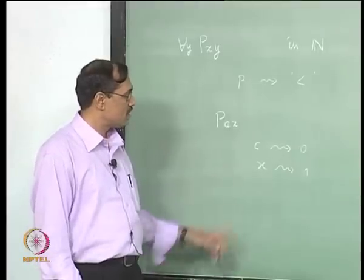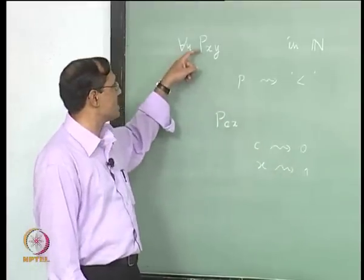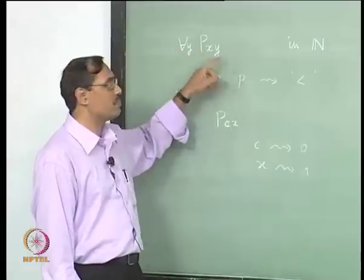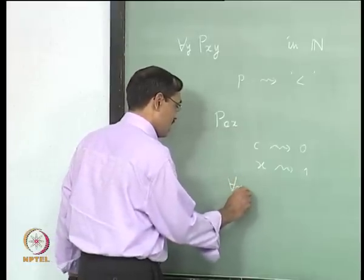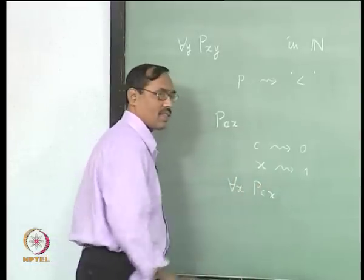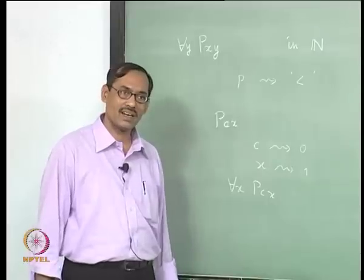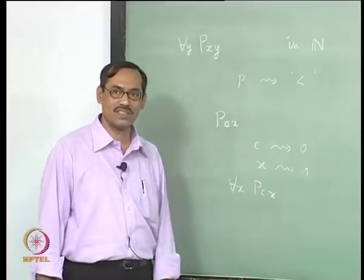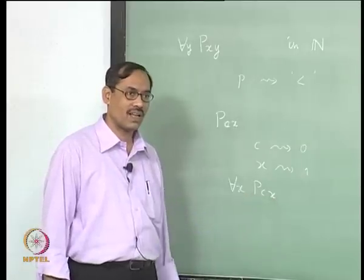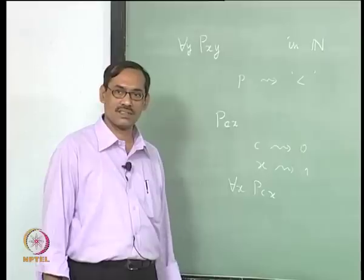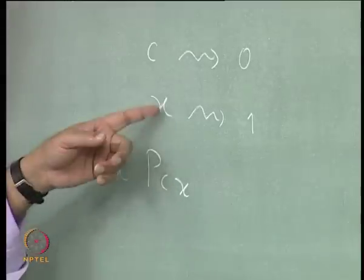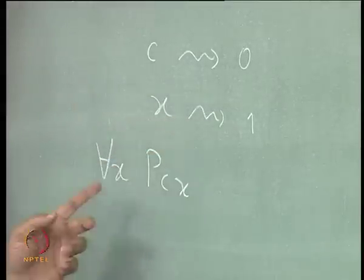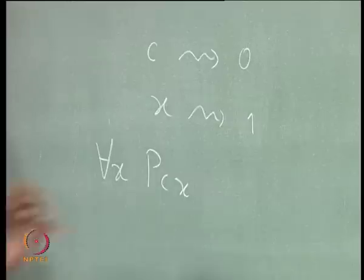Suppose I associate this x to 1. Now I can read the sentence; it will look like '0 is less than 1', which is a sentence in natural numbers. Had I associated x to 0, that is again a sentence: '0 is less than 0'. It may be false — it does not matter — it is a sentence. This is what we are planning to do: not only associate the predicates, but associate the variables and constants, so that we get some sentence in our domain of interpretation.